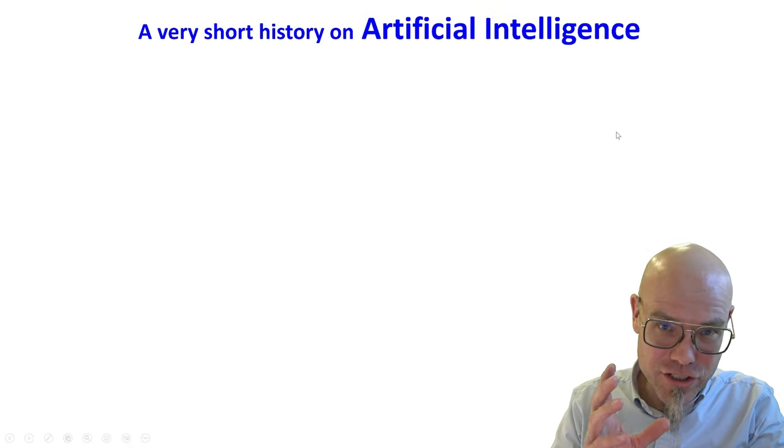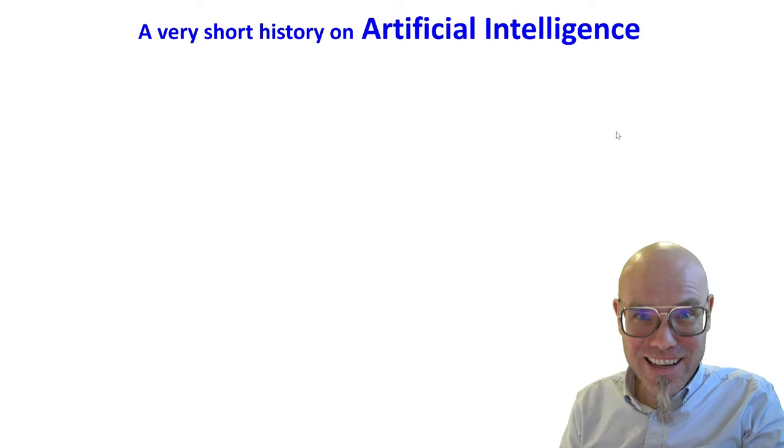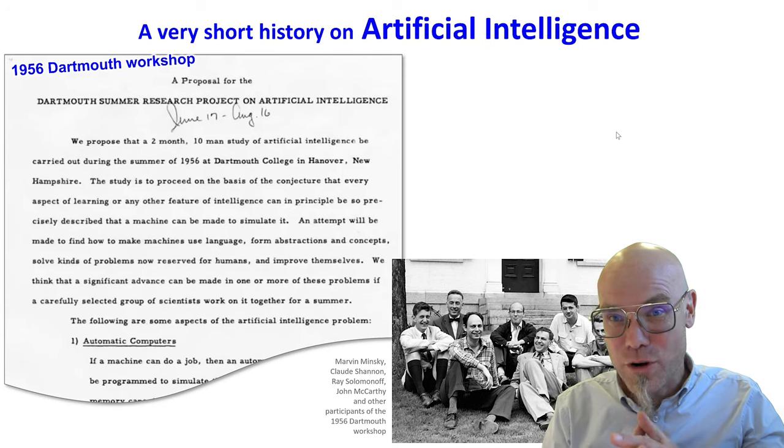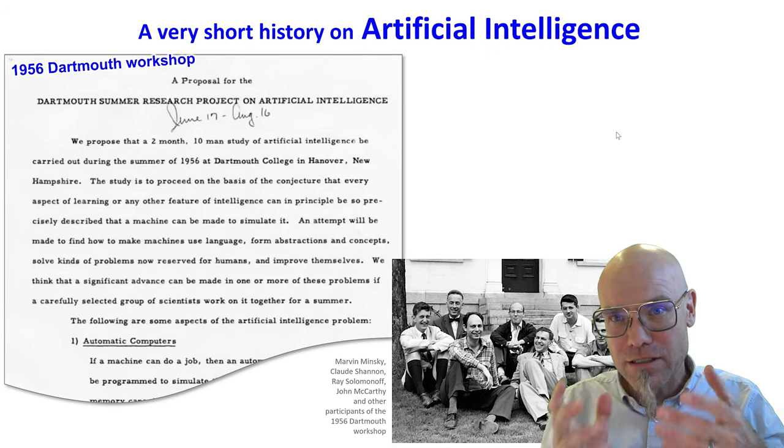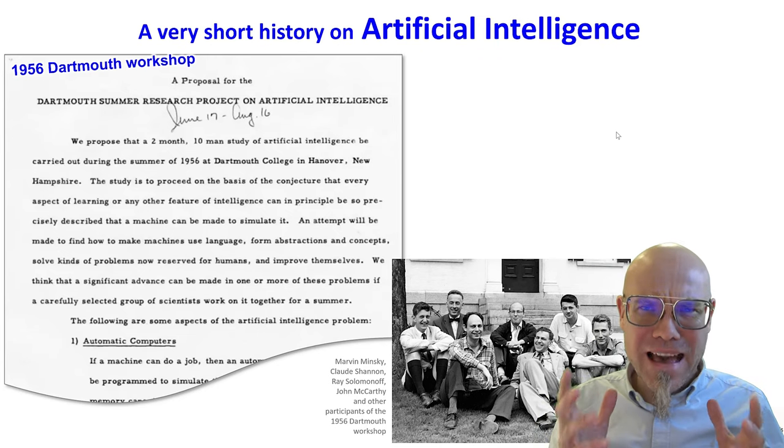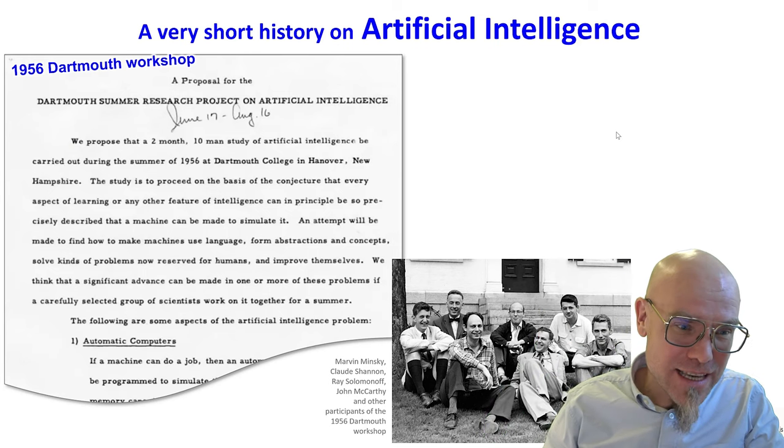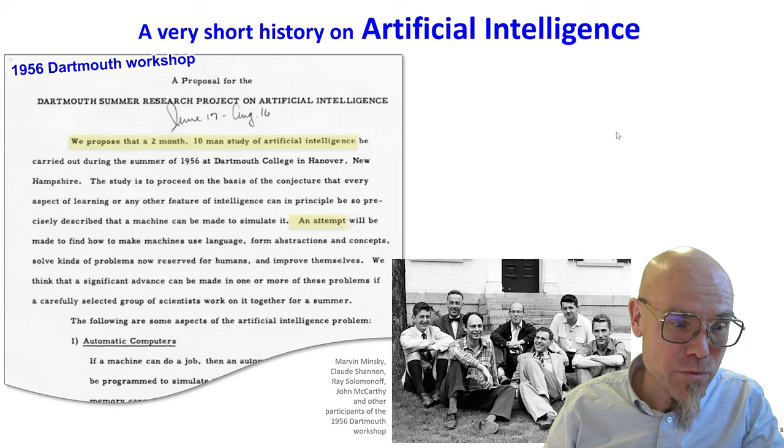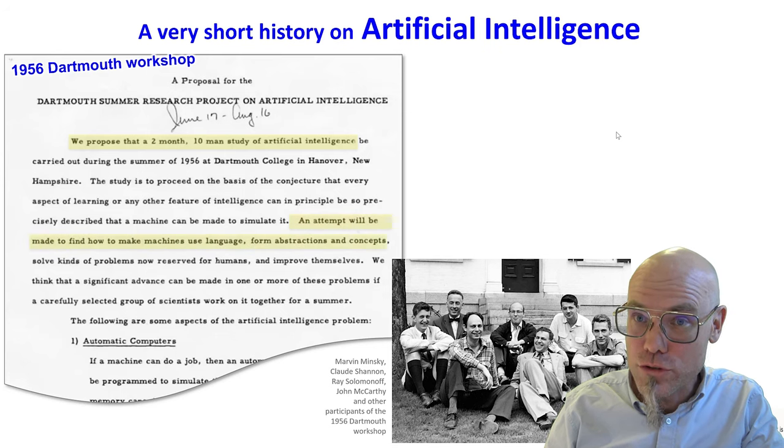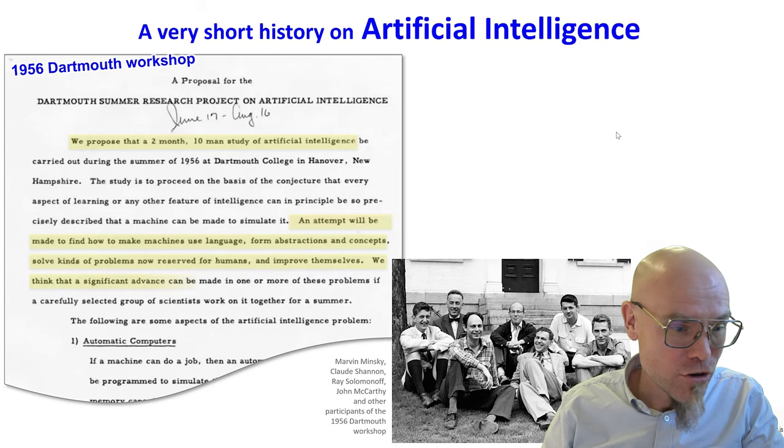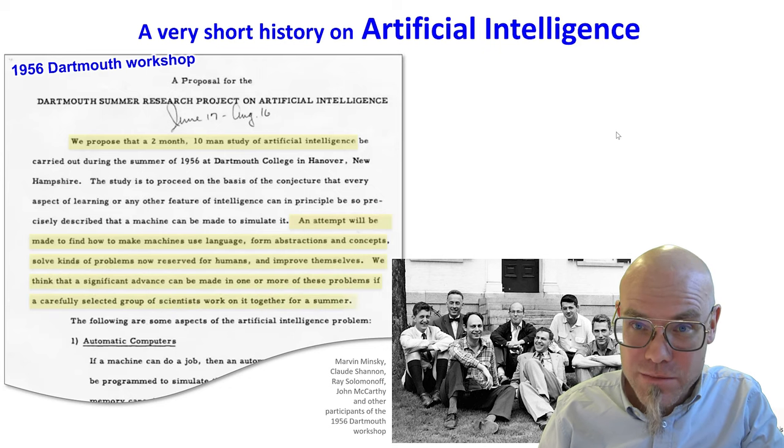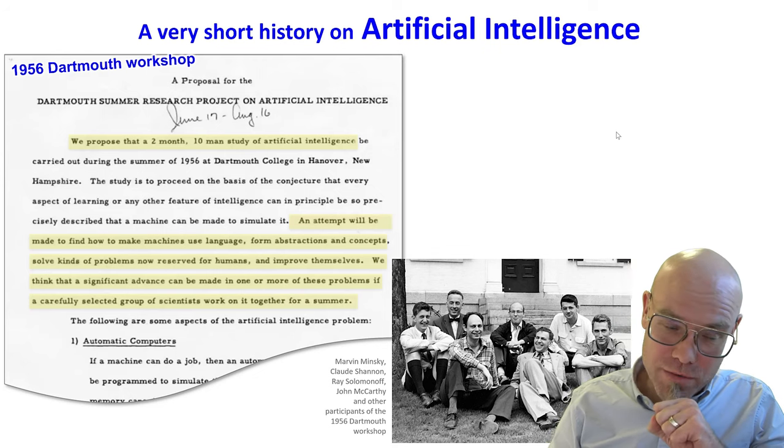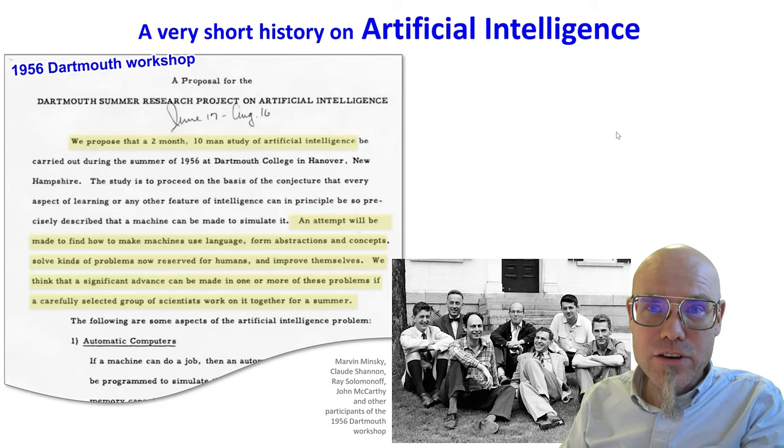The idea of intelligent machines goes back to the Greeks and Romans, but we can start with the Dartmouth workshop in 1956. There was a workshop referred to as the beginning of the systematic way of using computer science to create machine intelligence. They proposed a two month, ten man study of artificial intelligence. We think that significant advance can be made if a carefully selected group of scientists work on it together for a summer.